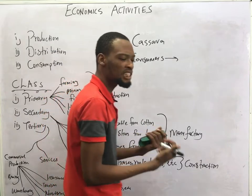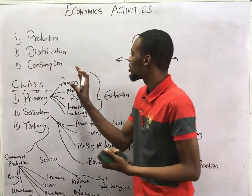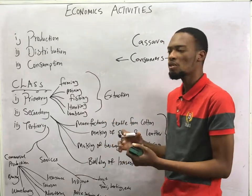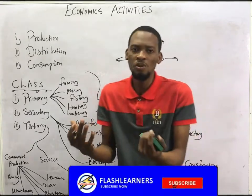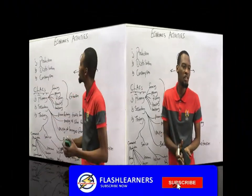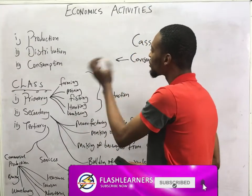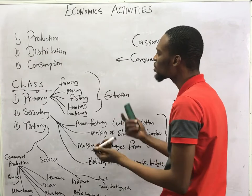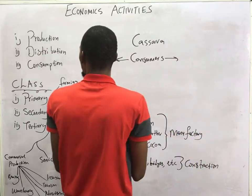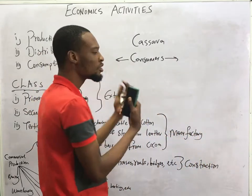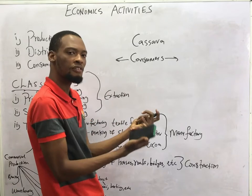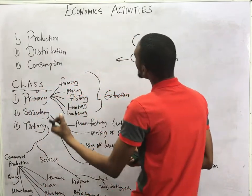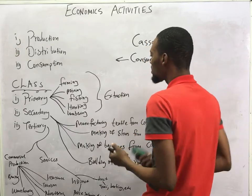After distribution comes consumption. You have distributed the goods, so the people you made them for need to consume them. So the economic activities are production, distribution, and consumption, and they are grouped into three. These activities are classified into three: primary, secondary, and tertiary activities.